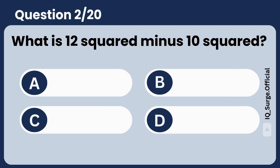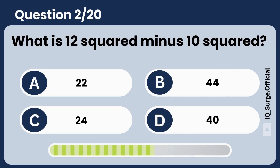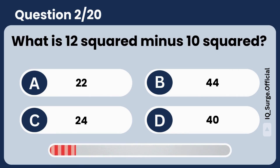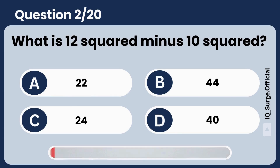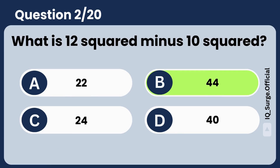What is 12 squared minus 10 squared? Answer: 44. Sharp thinking.